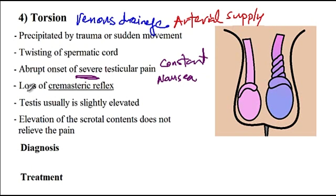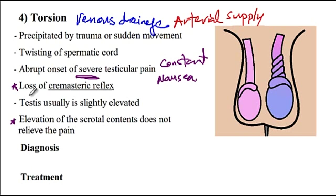In terms of physical findings, there would be loss of the cremasteric reflex. The testis is usually slightly elevated due to the twisting of the spermatic cord, and elevation of the scrotal contents either does not relieve the pain or could make it worse. These are important findings that help differentiate epididymitis from testicular torsion: with epididymitis the cremasteric reflex is normal and elevation relieves pain, but with testicular torsion the cremasteric reflex is lost and elevation does not relieve pain.